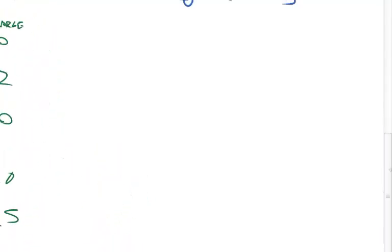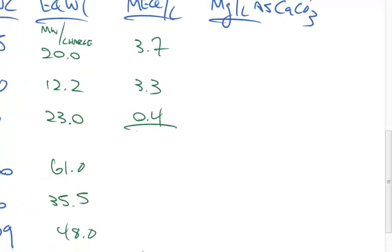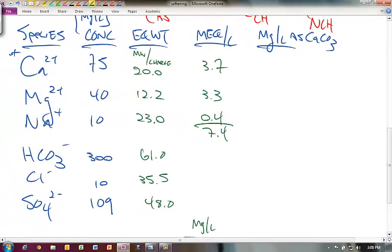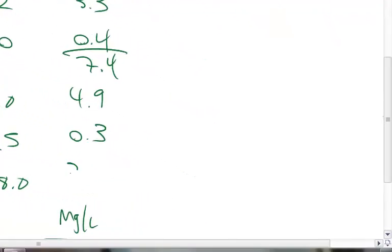So 75 divided by 20 gives us 3.7, then 3.3, and 0.4. Sum those up and we get 7.4. For the anions, we have carbonate at 4.9, 0.3, and 2.2. Sum those up and we get the same 7.4, so we have the sum of the anions and the cations in solution balanced.